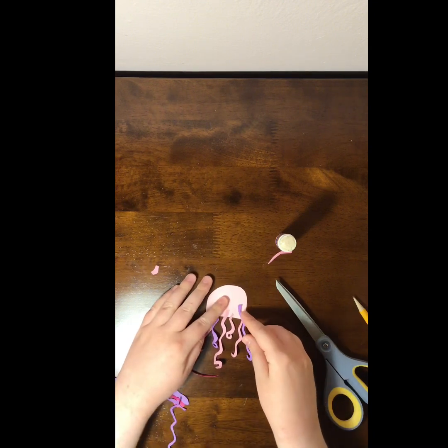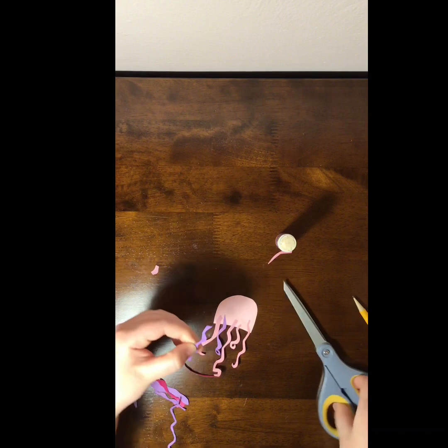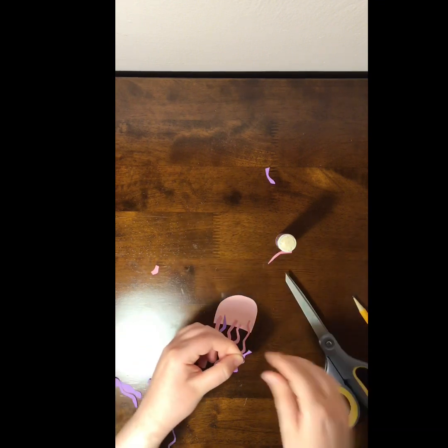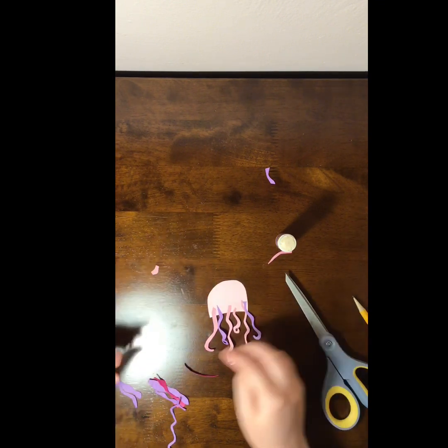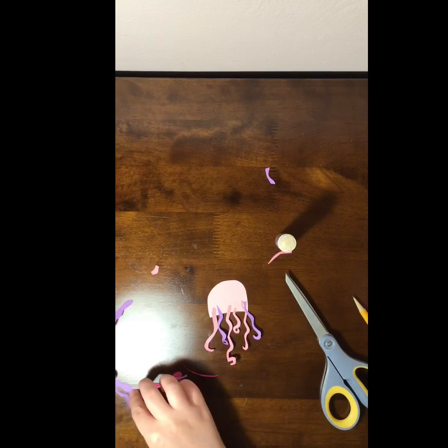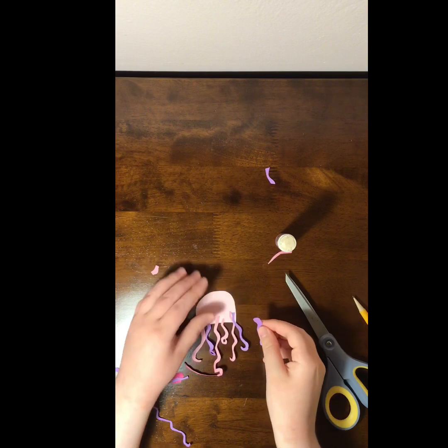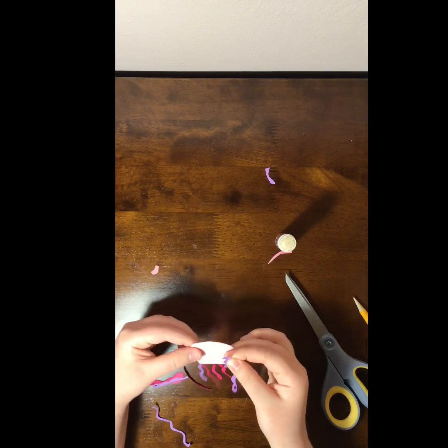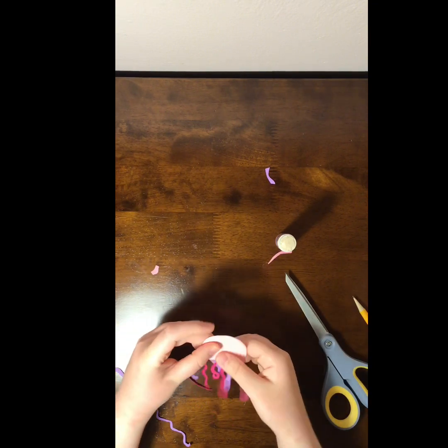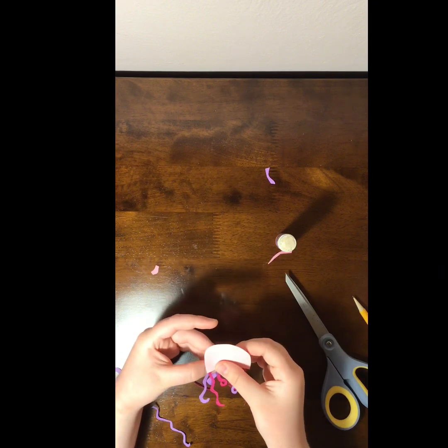Just strategically placing them where I think that they would look good. Apply more glue when I need it. Trimming them when I need to. And just putting them in there. It's really all about how you want yours to look. You can decide all of this. Just the main thing is glue and stick the tentacles in the back if you want them to look good.